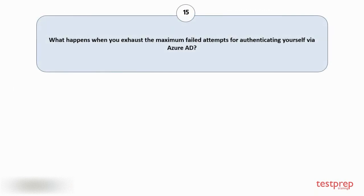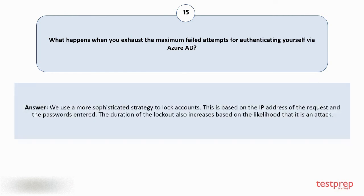Question number fifteen: what happens when you exhaust the maximum failed attempts for authenticating yourself via Azure AD? Your answer is: a more sophisticated strategy is used to lock accounts. This is based on the IP address of the request and the passwords entered. The duration of the lockout also increases based on the likelihood that it is an attack.